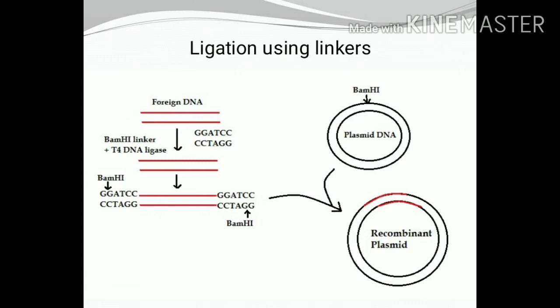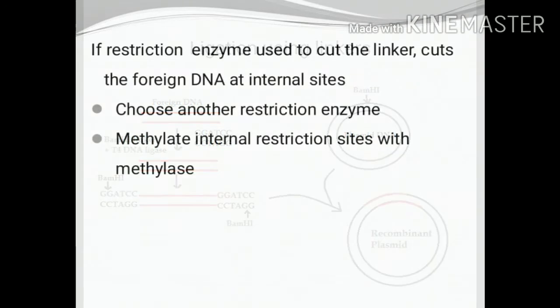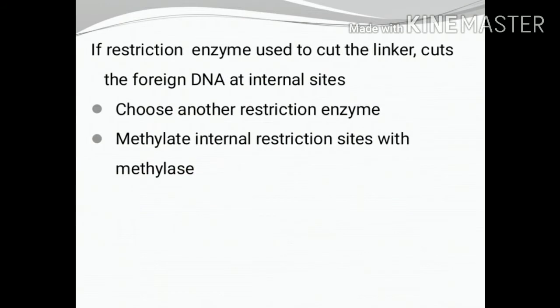In the figure, a BamHI linker is joined to both ends of the foreign DNA using T4 DNA ligase. The plasmid DNA is also cut with the same restriction enzyme and both are mixed to get the recombinant plasmid. There is a chance that the restriction enzyme used to cut the linker cuts the foreign DNA at internal sites. In order to avoid this, choose another restriction enzyme or methylate the internal restriction sites with DNA methylases.